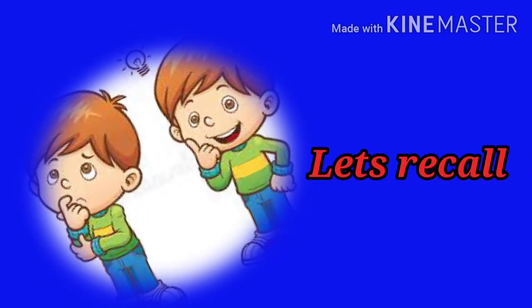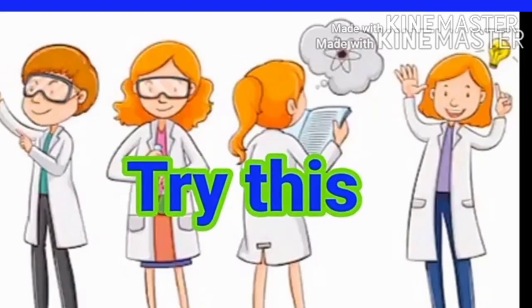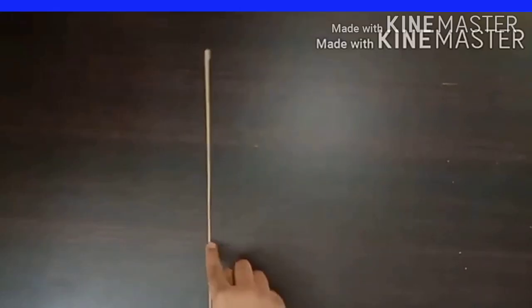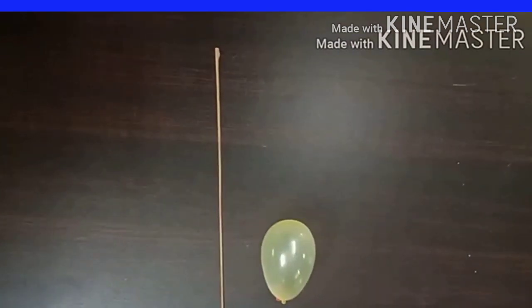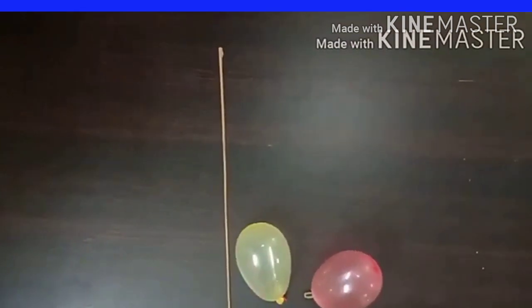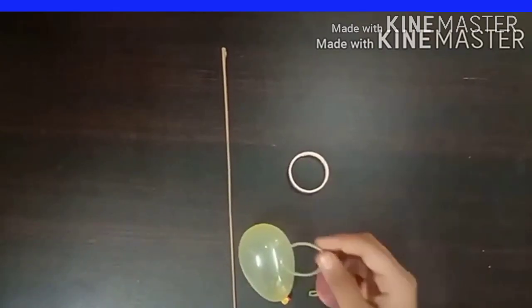Let's recall. Students, have you tried the activity that shows air has weight, which is given on page number 16 of your science textbook? Try this: take a stick from a broom, paper or plastic two balloons, cello tape if required, a rubber band, and a pin.